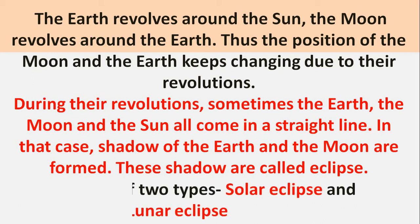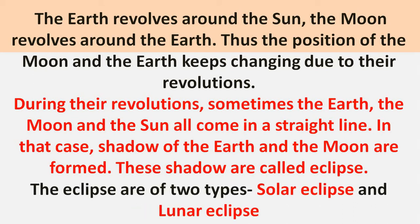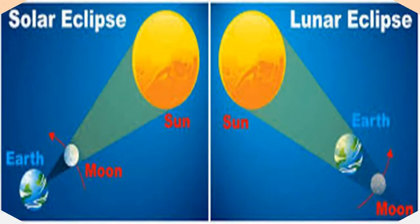Children, there are two types of Eclipse: Solar Eclipse, which means 'Surya Grahan', and Lunar Eclipse, which is called 'Chandra Grahan'. In Solar Eclipse, the moon comes between the Earth and the sun, and the shadow of the moon is cast on the Earth. Whereas in Lunar Eclipse, the Earth comes between the sun and the moon, and the shadow of the Earth falls on the moon.